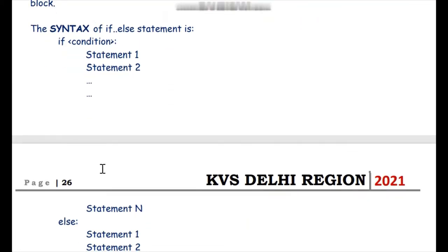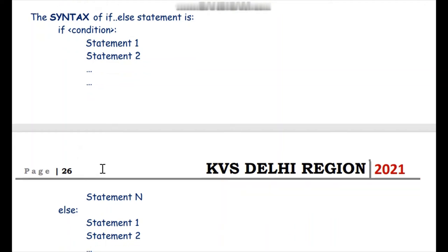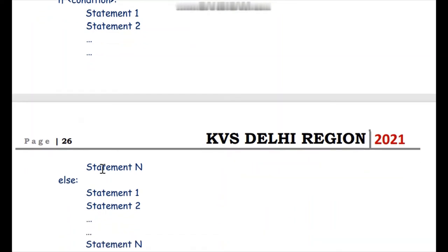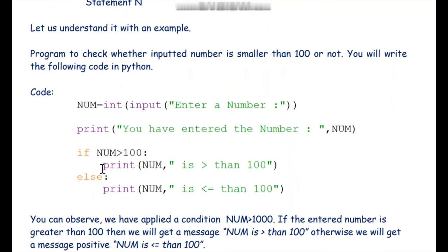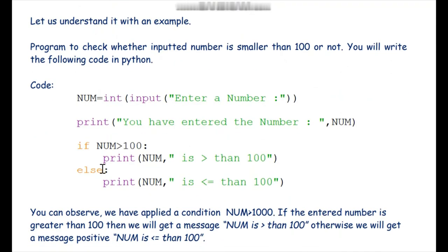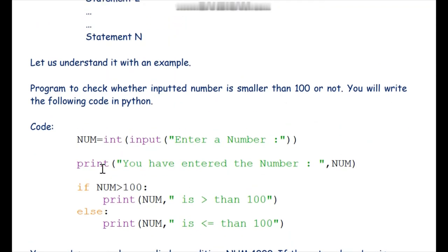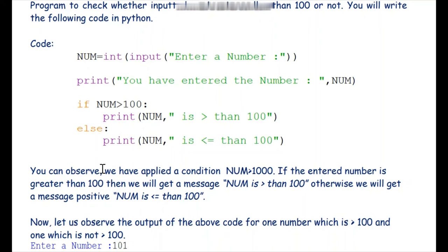It is not mandatory to give else every time. We can have an if without an else part, but as per the problem or situation demands, we specify else where needed. This is the decision of the user whether to give the else part or avoid it.